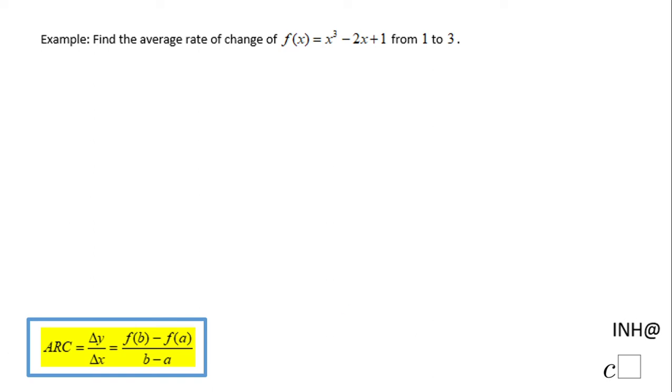Welcome or welcome back to any help at C-square. In this example, we need to find the average rate of change. The function is f(x) = x³ - 2x + 1, and we need to find the average rate of change from 1 to 3.